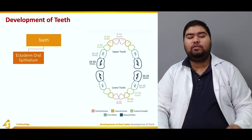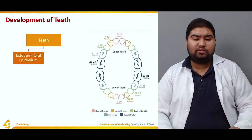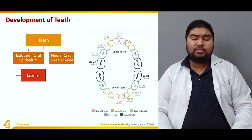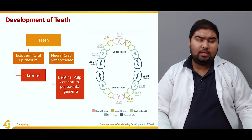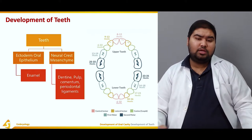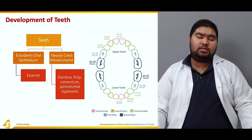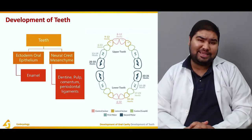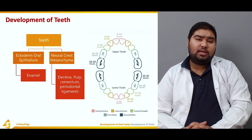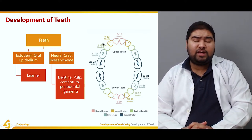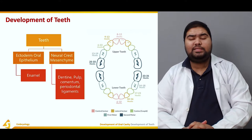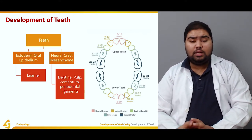Development of teeth actually takes place from ectodermal oral epithelium, which contributes to the enamel, and neural crest mesenchyme, which contributes to the dentine, the pulp, the cementum, and the periodontal ligaments. So we have two sets of origins for the development of teeth: oral epithelium giving rise to enamel, and neural crest mesenchyme giving rise to the dentine, pulp, cementum, and periodontal ligaments.